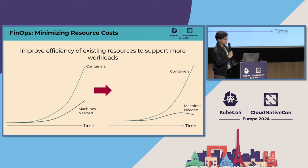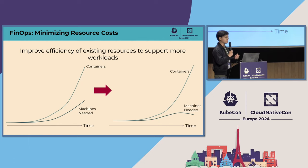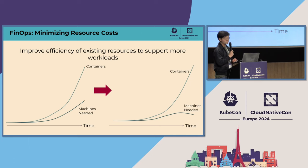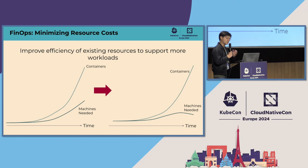Unfortunately, managing such large numbers of pods usually means needing a large number of machines to support them as well, and by extension, this would cost us millions of dollars per quarter. As such, one of the main objectives in FinOps is to find solutions to optimize the usage of our existing resources in order to continue supporting an ever-growing number of containers while minimizing the physical resource requirements.